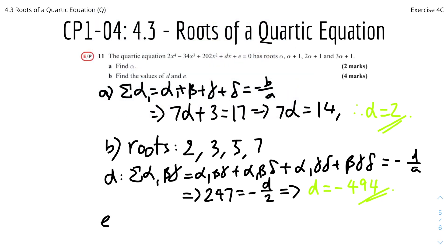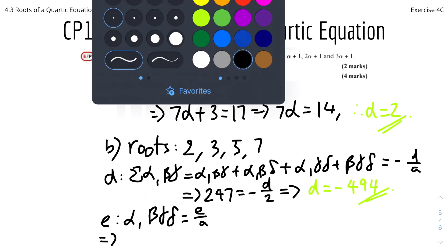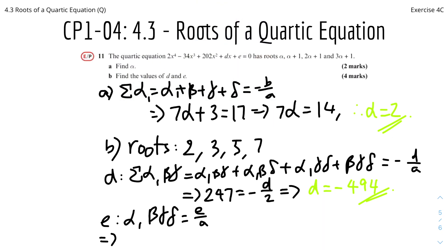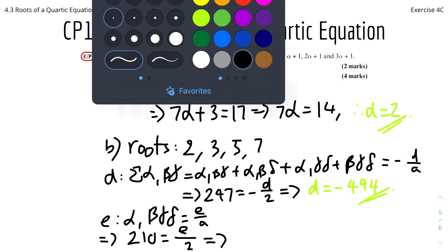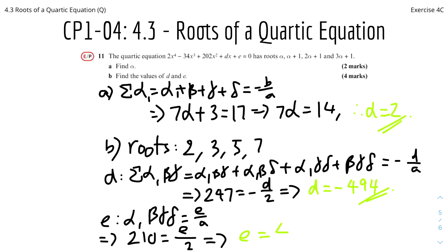To find e, we use the product of all roots, which equals e/a. The product is 2 × 3 × 5 × 7 = 210. So 210 = e/2. Multiplying both sides by 2 gives e = 420.